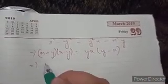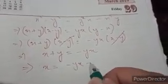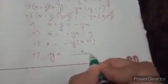Rearranging: x² minus y² equals y²x minus x²y. Factoring the left side as (x plus y)(x minus y), and the right side with xy common gives xy(y minus x). Cancelling (x minus y) and (y minus x) by taking a minus common, we get x plus y equals minus xy. Bringing terms over: x equals minus xy minus y, so x equals minus y(x plus 1), giving y equals minus x divided by (x plus 1).